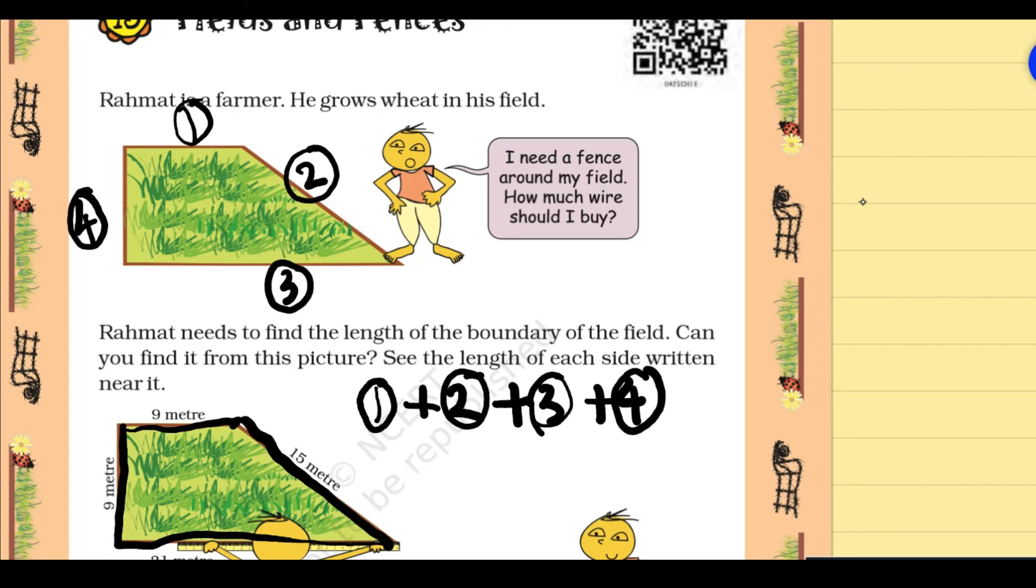Okay, what is the first side? First side is 9 meters. The second side is 15 meters. And the third side is 21 meters. And the fourth side is 9 meters.